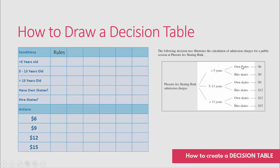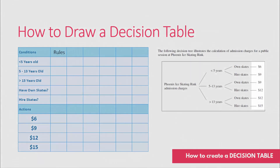We then have our final thing, which is our actions — the end result. To draw up a table, you can do something like this simply in Word. You can have your conditions listed down with your actions, and then you need your rules. Your rules are simple yes/no tick boxes, crosses, things like that.